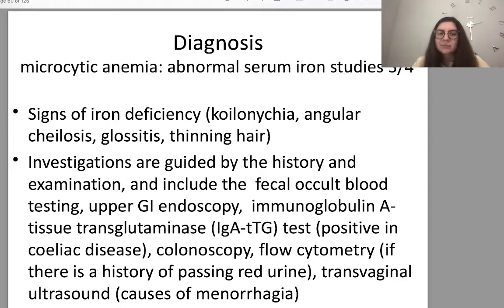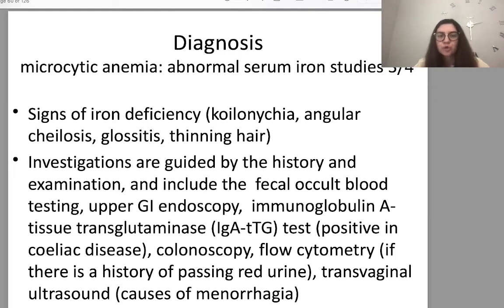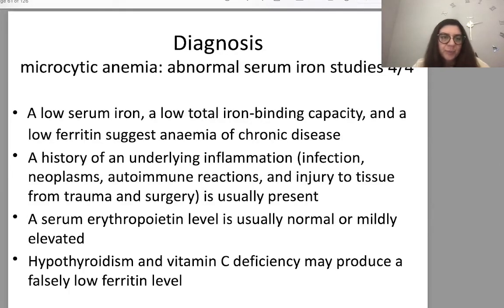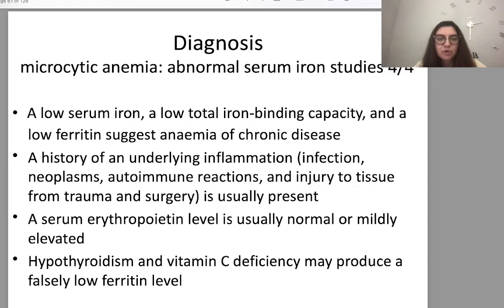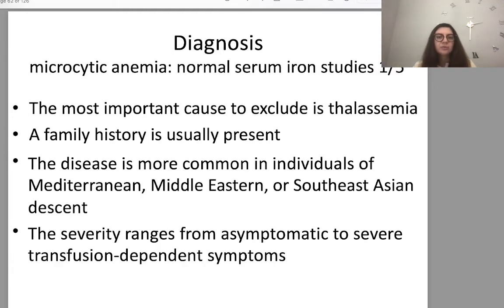Investigations guided by history and examination include: fecal occult blood testing to exclude GI bleeding; upper GI endoscopy; immunoglobulin A tissue transglutaminase test; colonoscopy; flow cytometry; transvaginal ultrasound for causes of menorrhagia. Low serum iron, low total iron-binding capacity, and low ferritin suggest anemia of chronic disease — usually also microcytic. A history of inflammation, infection, neoplasm, autoimmune reactions, or tissue injury is usually present. Serum erythropoietin level is usually normal or mildly elevated. Hypothyroidism and vitamin C deficiency may produce a falsely low ferritin level.